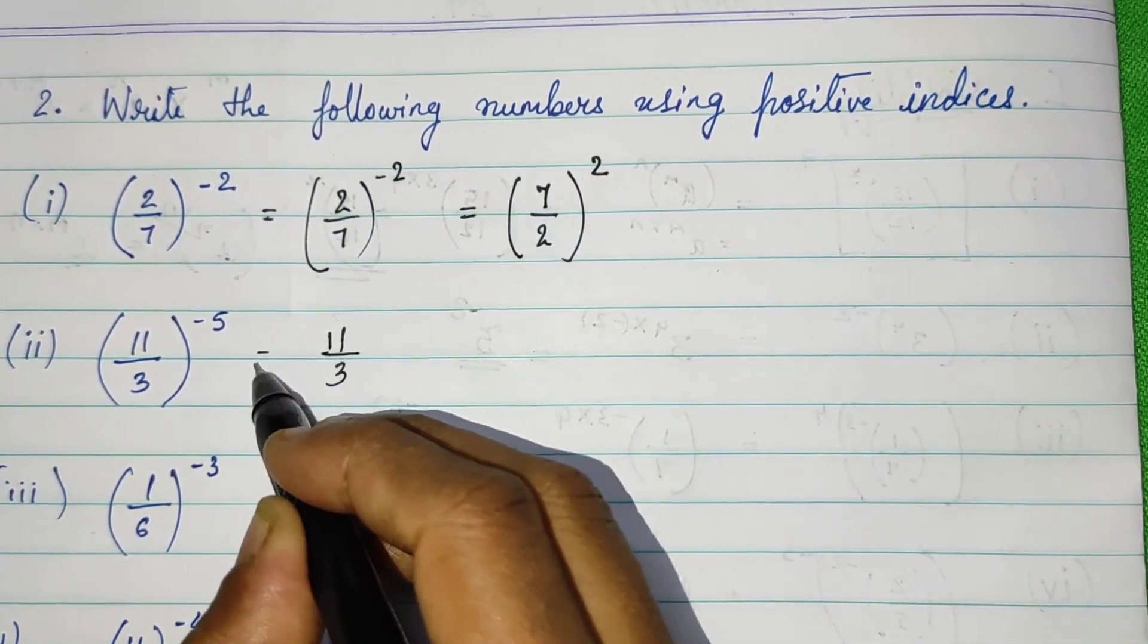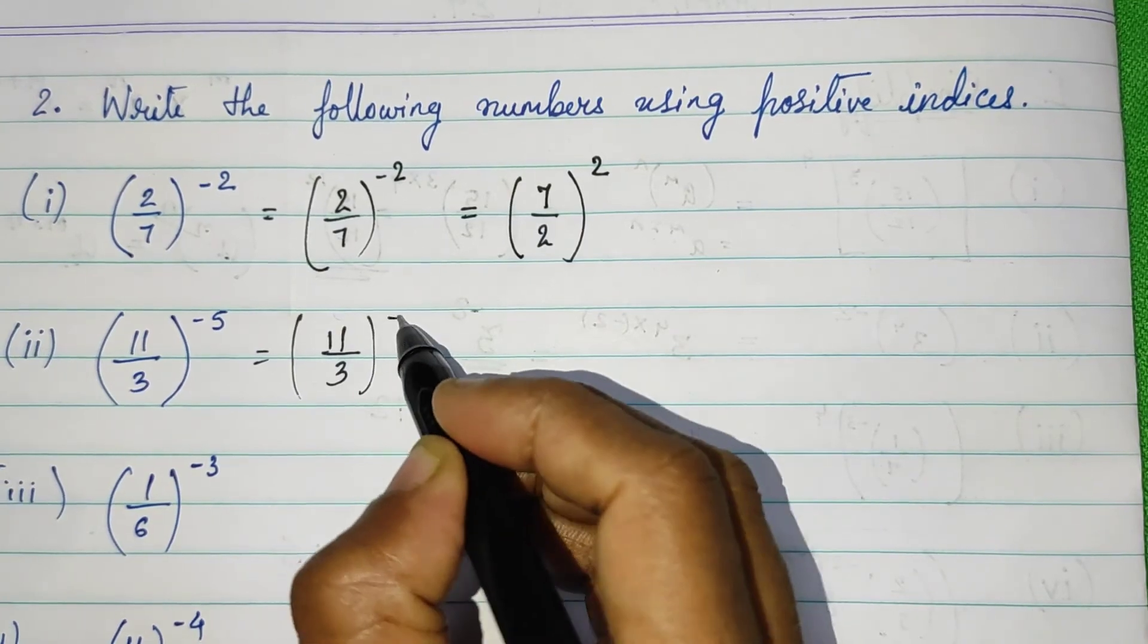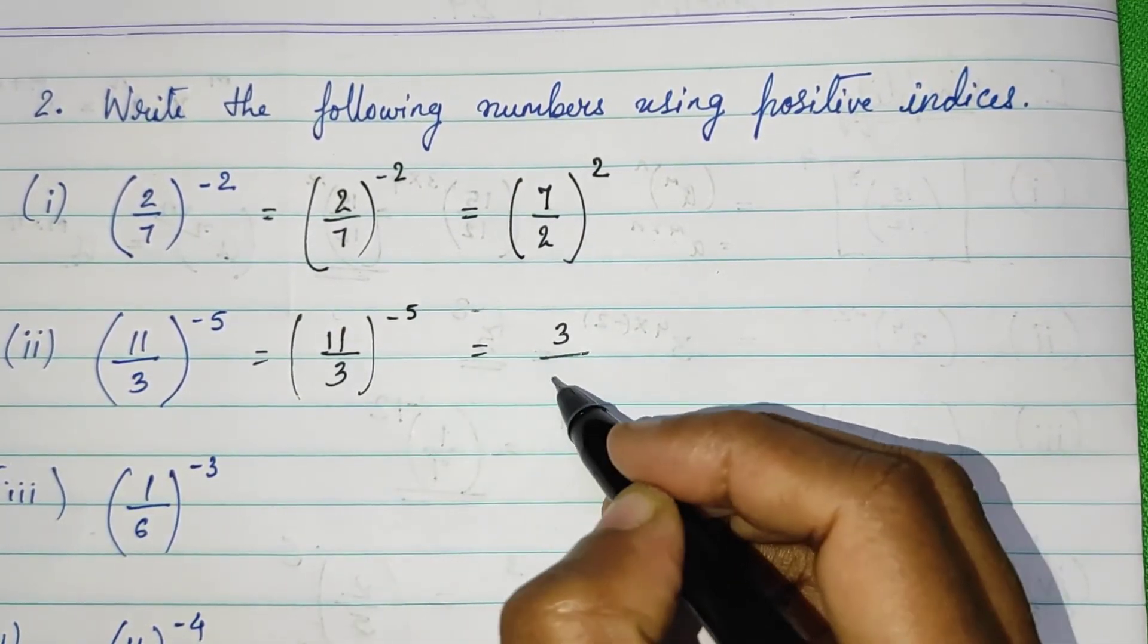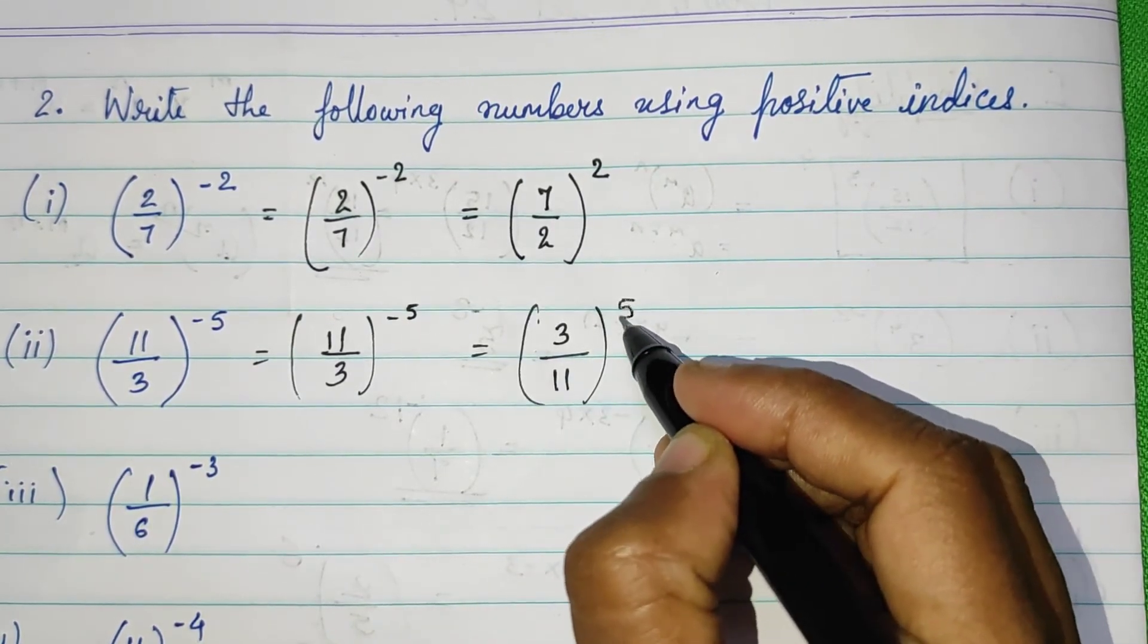Now see, 11 upon 3 the whole raised to minus 5. So simply you have to make reciprocal 3 upon 11 and 5.